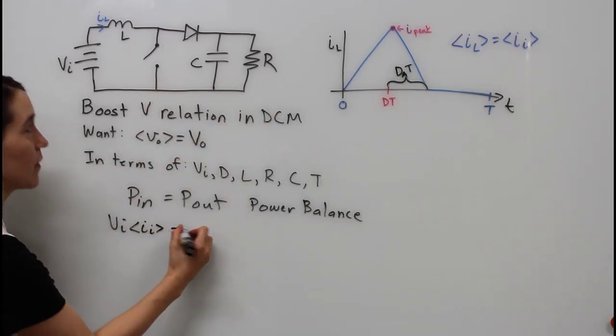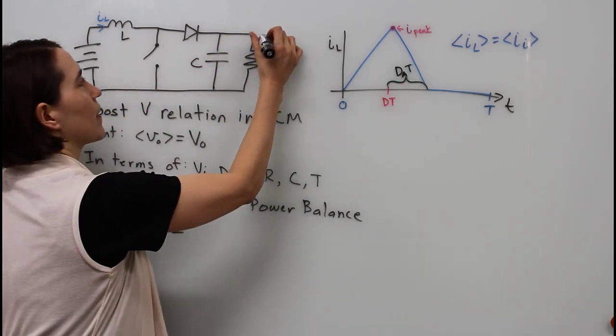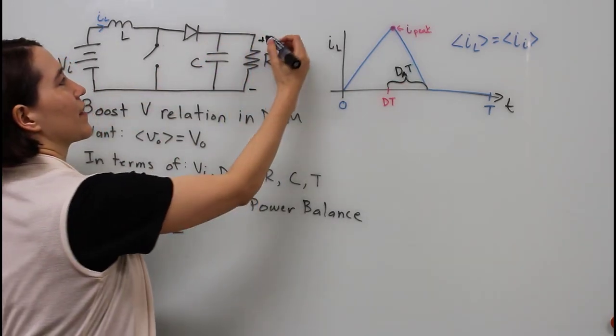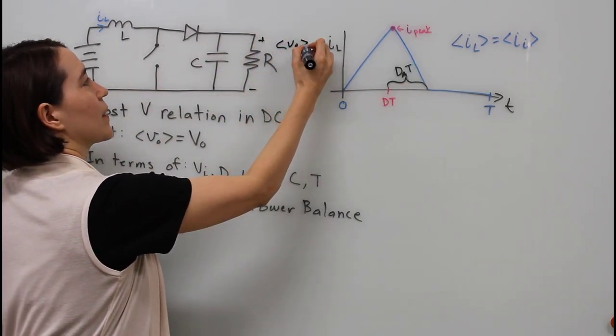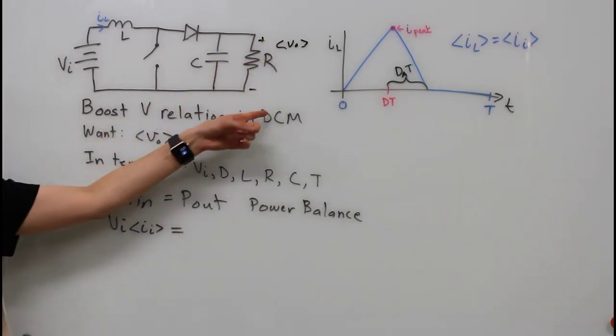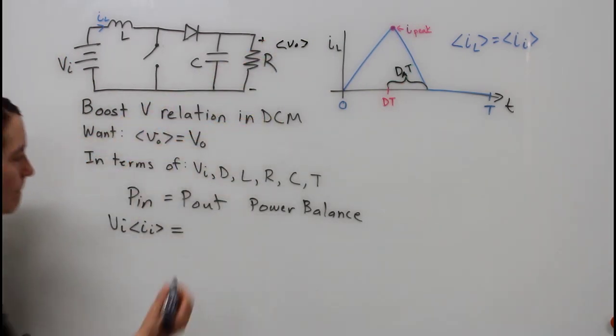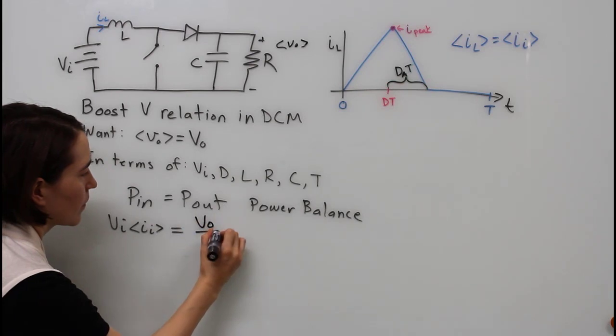The input voltage times the input current is input power, and that's going to be equal to the output power. Here we can look at the power through the resistor, so we can define the output voltage over the resistor and the power through that is going to be V squared over R.